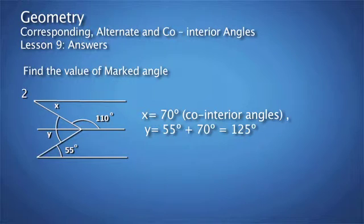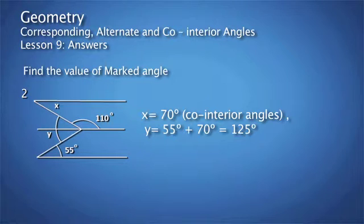Question 2. X is equal to 70 degrees. The reason is co-interior angles on parallel lines, because 70 plus 110 gives us 180 degrees. Then Y is equal to 55 degrees plus 70 degrees, which gives us 125 degrees. Did you get that right? Well done.